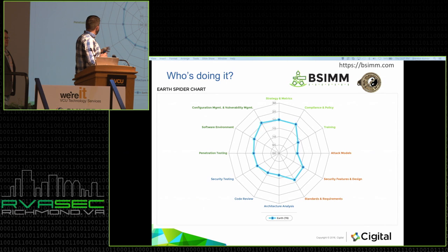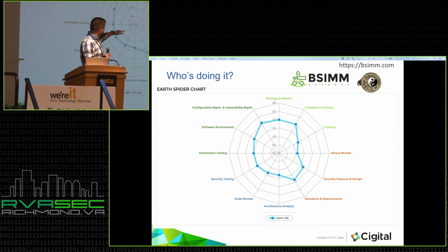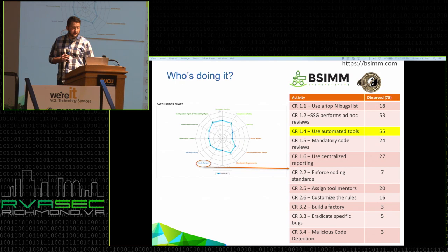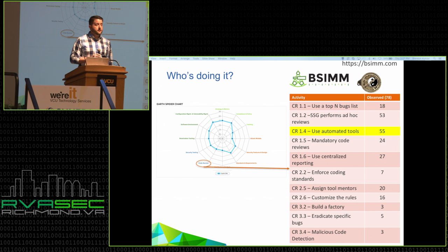These are the different practice areas — strategy and metrics, compliance and policy, attack models, standards and requirements. But the real focus of this talk is the seven o'clock position, which is code review — the same as SAST. There are about 15 activities listed here for performing code review. At the very top is a level one activity — not meaning it's easy, but that more people are doing it. Level three activities are harder because fewer groups actually perform them.